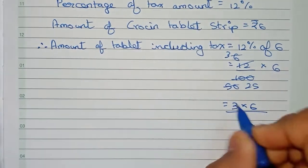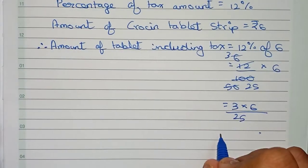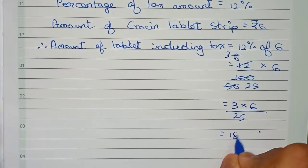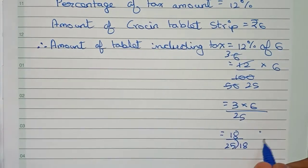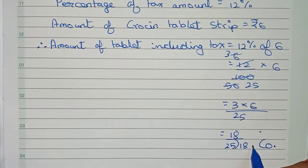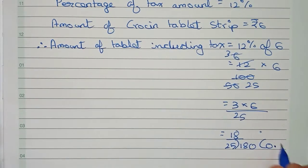So which will be 3 into 6, 18 by 25. So now I divide this 18. You cannot cut it, so I write 0 point. You can add one more zero here.